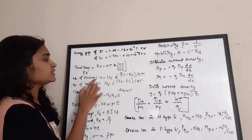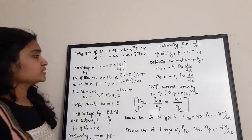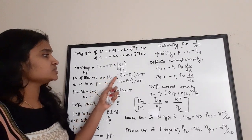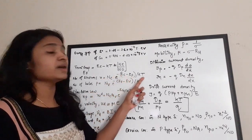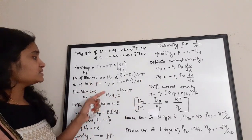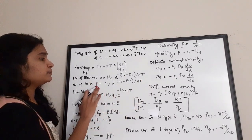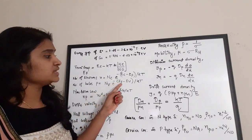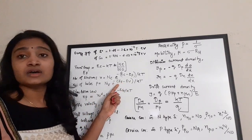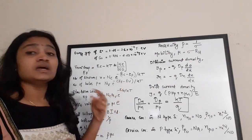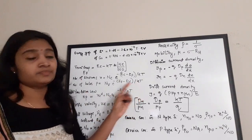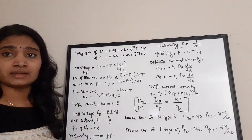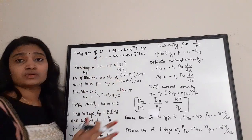The number of electrons n = Nc × e^(−(Ec − Ef) / kT), where electrons are present in the conduction band. The number of holes p = Nv × e^(−(Ef − Ev) / kT), where Ef is the Fermi energy level and Ev is the valence band energy level. These are the general equations for conduction and valence bands.